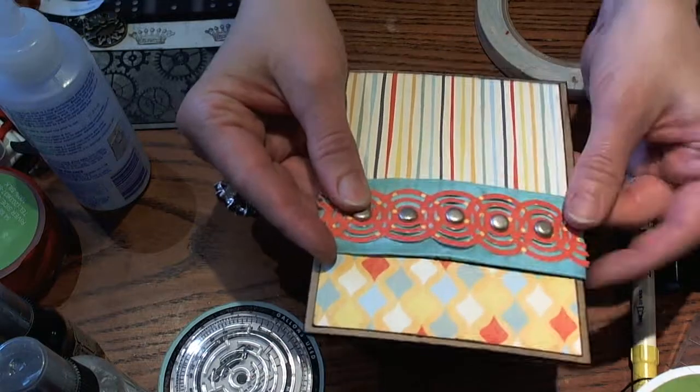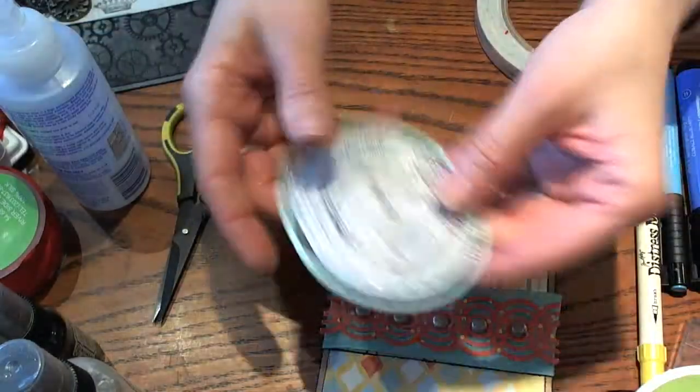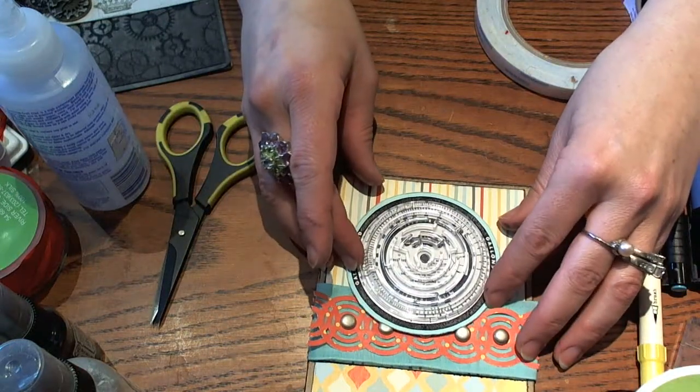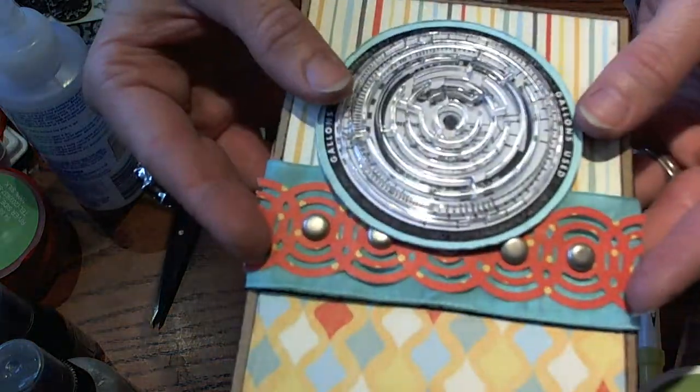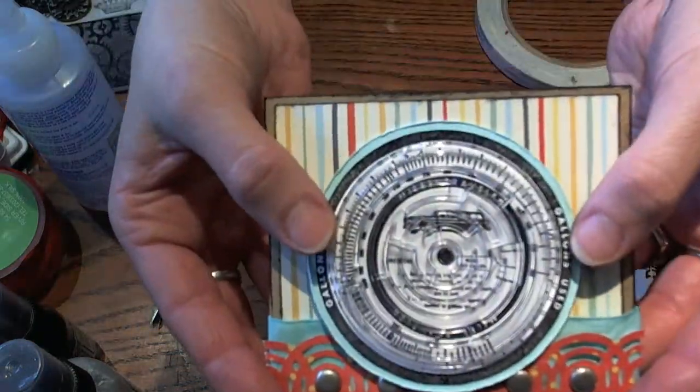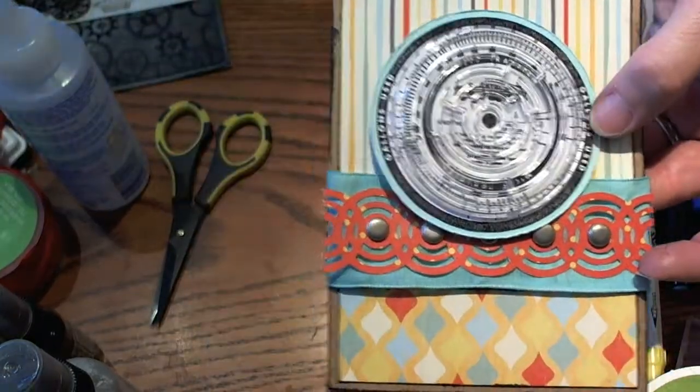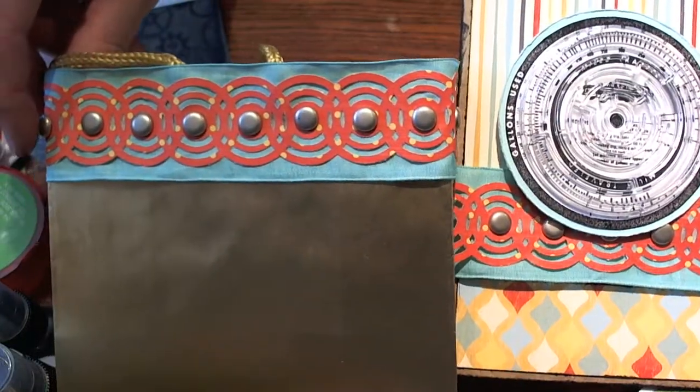You can always add extra glue underneath the ribbon if you want. And then we'll just attach this right to the front of the card. You could pop this up on pop dots as well if you wanted to give it some more dimension. But anyway, there is our fun card to go along with our beautiful gift bag for your Father's Day presents.